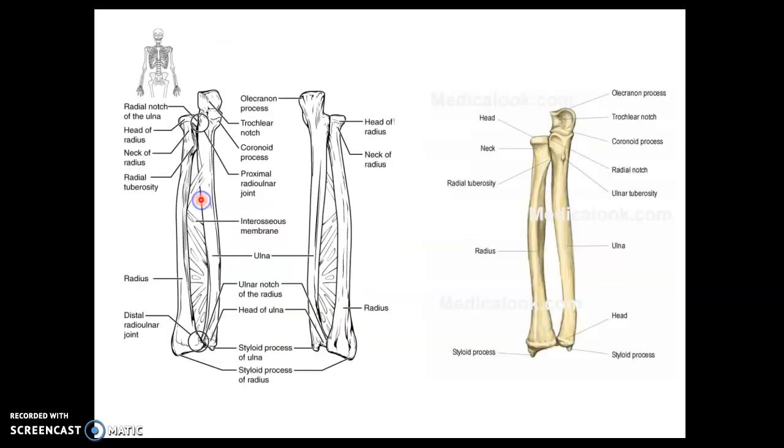So if we look at an image, the ulna is dominant at the proximal or elbow end, and the radius is much larger and more prominent at the wrist or carpal end, which is the distal end. Again, there's a lot of good landmarks on these bones for labs.